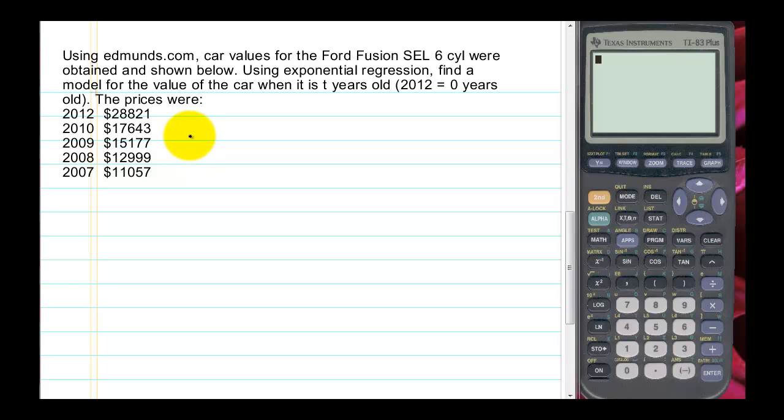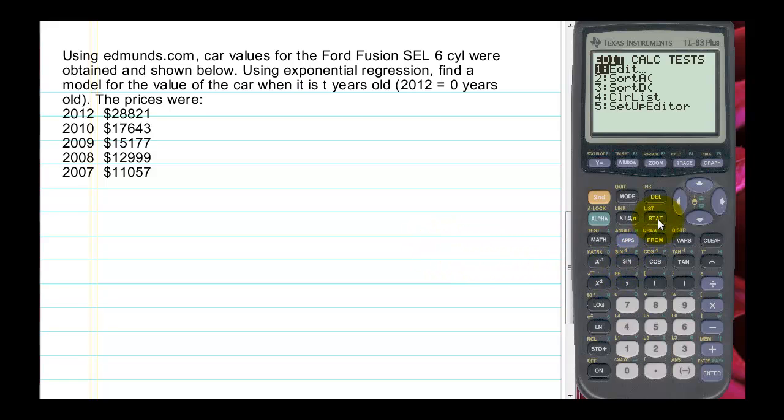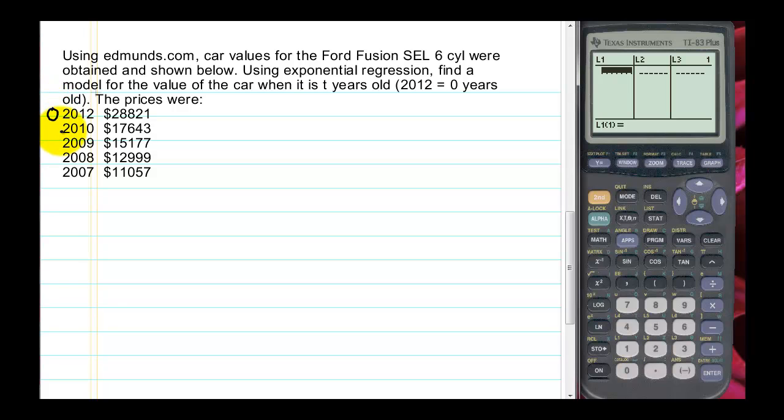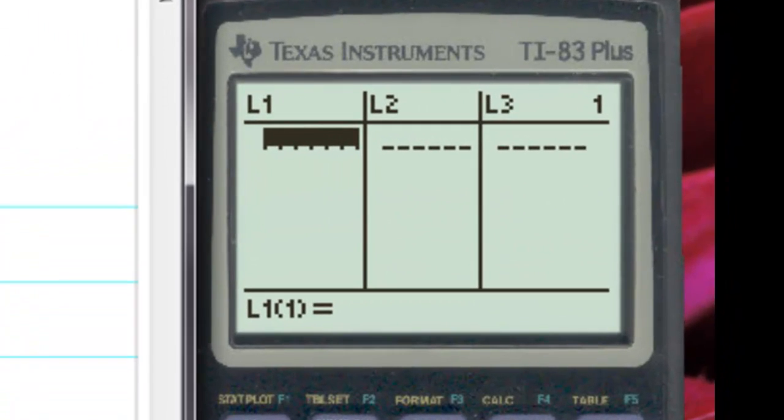To understand what the data looks like, we might want to make a scatter plot. And to do that, we can use the graphing calculator. So we're going to press the stat button and edit a list. And we're going to enter data in the list. Our L1 column will be our age. So we need to calculate the ages. We will define the new car age as 0. This would then be 2 years old, 3, 4, and 5. So we'll be using those for our L1 values. So let's enter those.